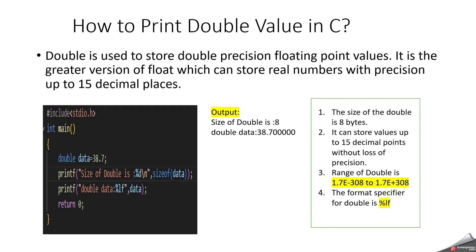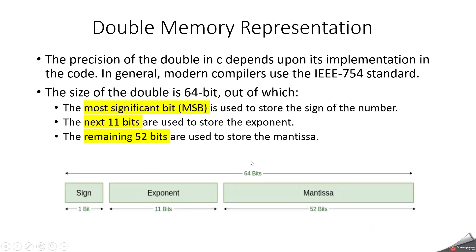Any variable declared using a double data type in C takes 8 bytes, which is equal to 64 bits. The syntax: to create a double variable, use the keyword double followed by your variable name. To print a double value in C, use the format specifier %lf. Here I have written a short C code — I created a double variable called data and assigned the value 38.7. The size of that variable is 8 bytes, and printing it using %lf gives the expected output.